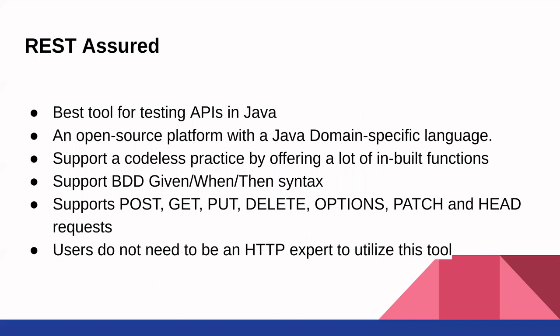The fifth one on our list is REST Assured. REST Assured is considered one of the best tools for testing APIs in Java. It is an open source platform with a Java domain-specific language. The REST Assured API was created so that you don't need to be an expert in HTTP to test web APIs. With REST Assured, you don't have to be an HTTP expert, and you don't have to code things from scratch as it comes with some inbuilt functions. Finally, it supports the syntax of behavior-driven development, or BDD testing — meaning you will be using syntax like given, when, and then.